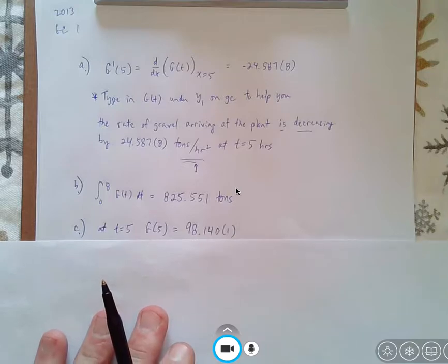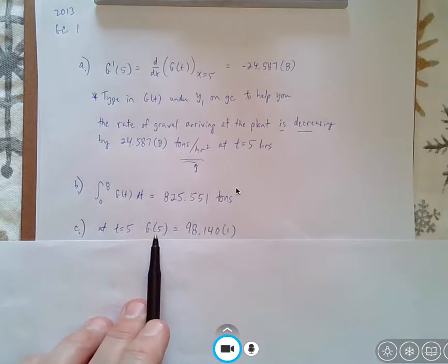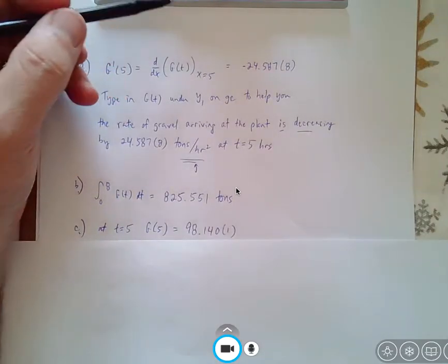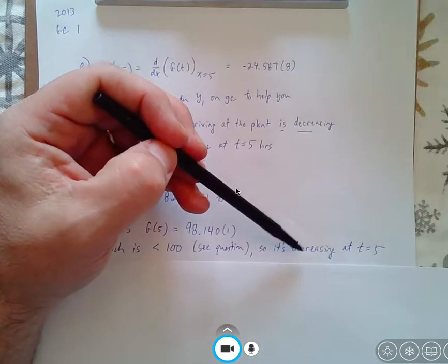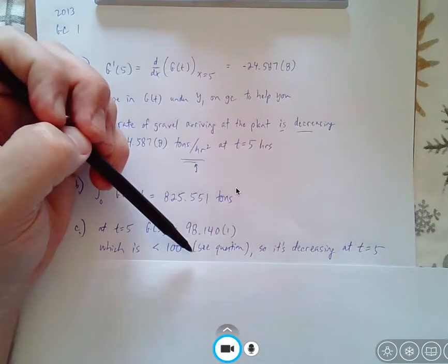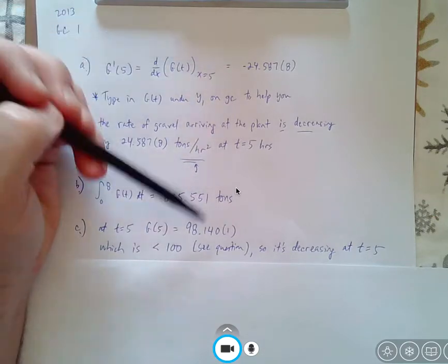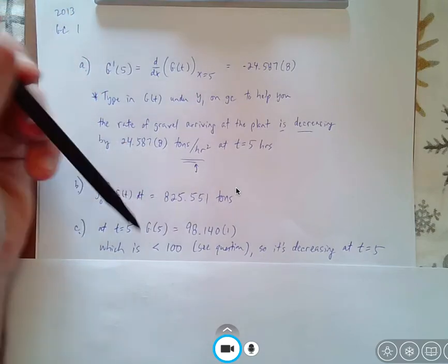Question C, looking at your table, time 5, the amount of gravel in the unprocessed is 98.140 or 141. And if you look at the question, they say that if it's less than 100, it would be decreasing at that instant. So again, you have to look at the question, and that is in the haiku, and refer to that when you're at. It's like you have to use each part of the question to get your answers here.